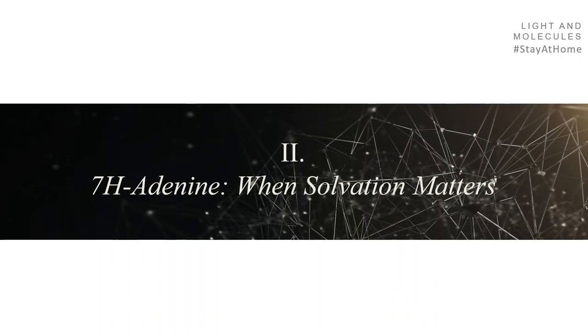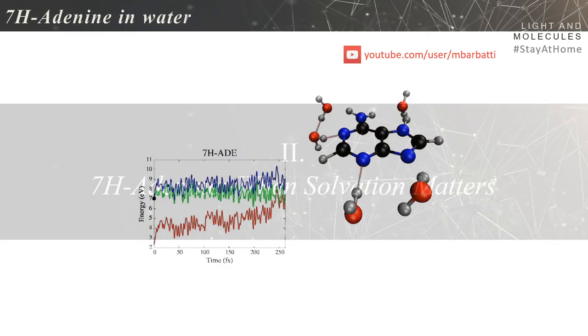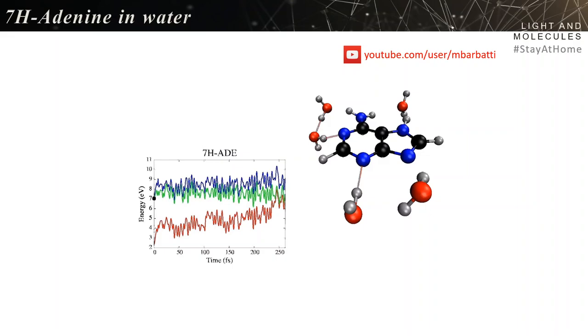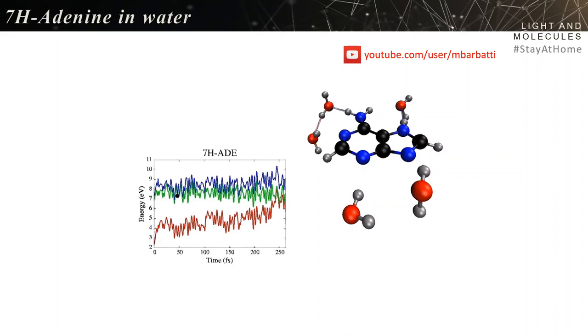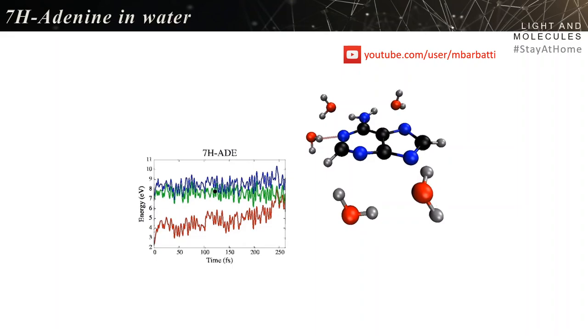Second case: 7H Adenine when solvation matters. A few years ago I was looking at 7H Adenine, this isomer of adenine. I did ADC2 dynamics surface hopping. This is one example of trajectory with microsolvated adenine. Doing the dynamics, I wasn't expecting much.